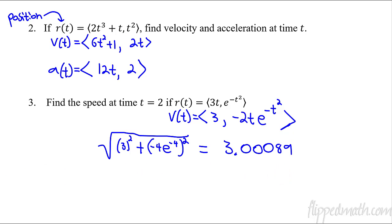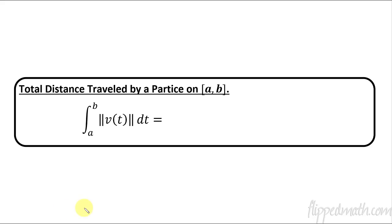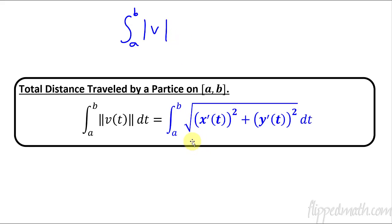Now let's talk about total distance traveled by a particle. If you remember from before with integrals, you take the integral from a to b of the absolute value of velocity. In vector form, that's the magnitude of the velocity vector — which is your speed. So total distance equals the integral from a to b of the speed dt.